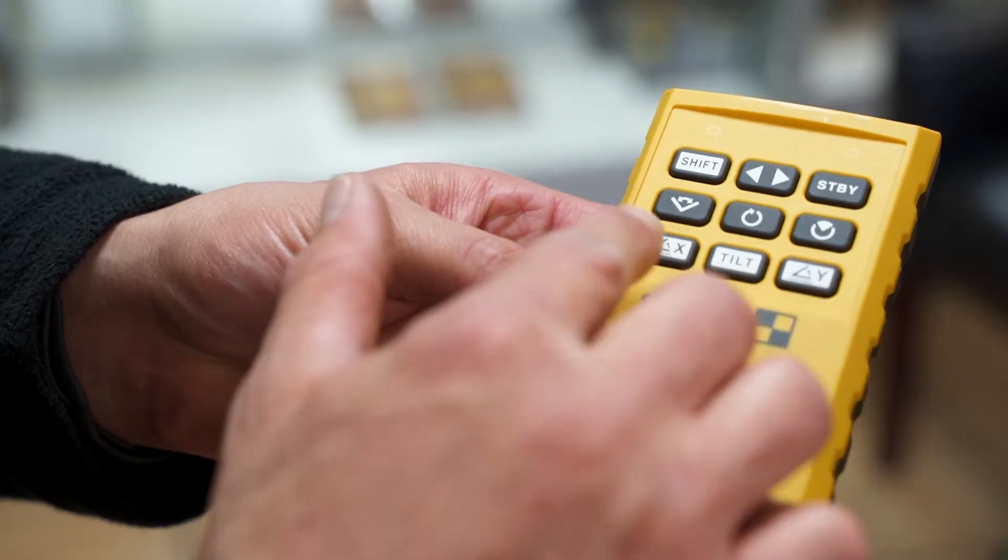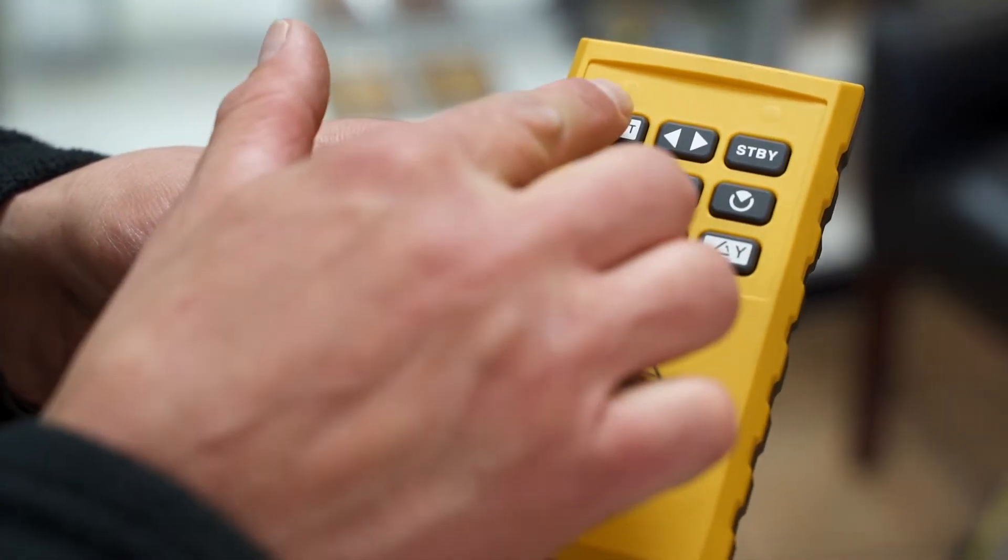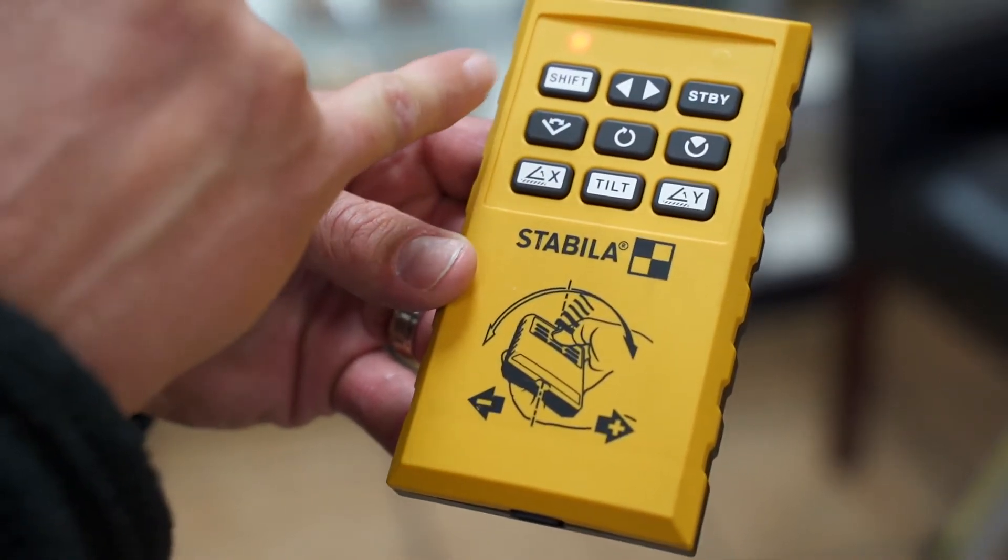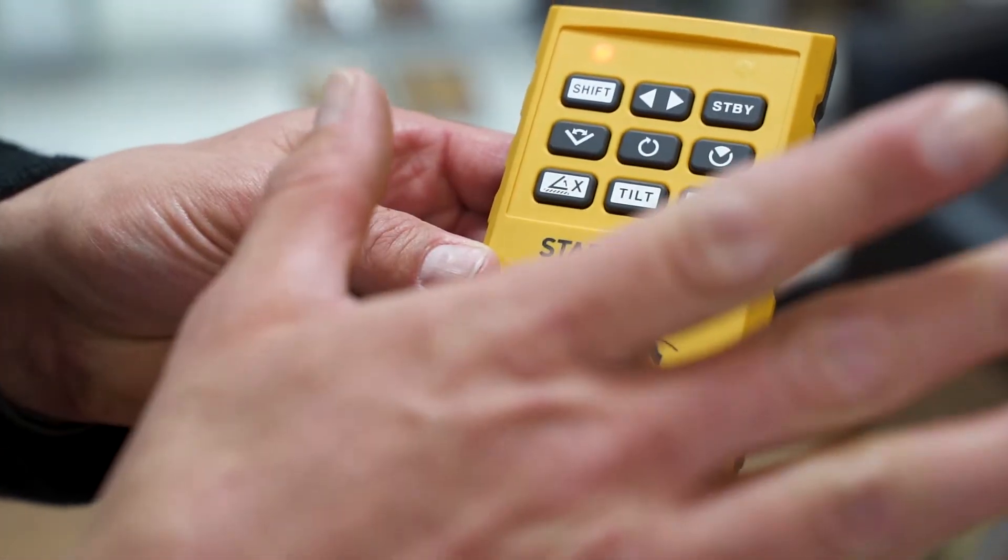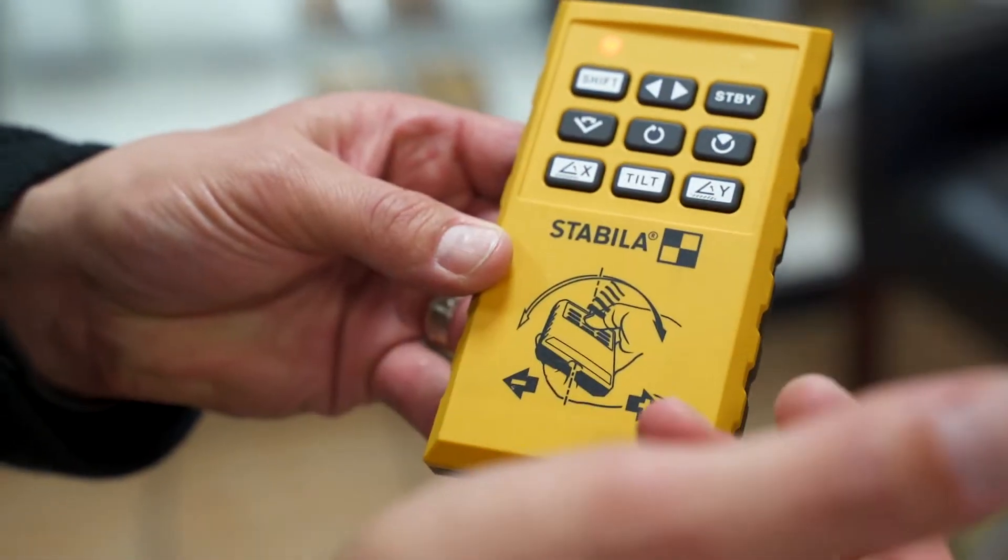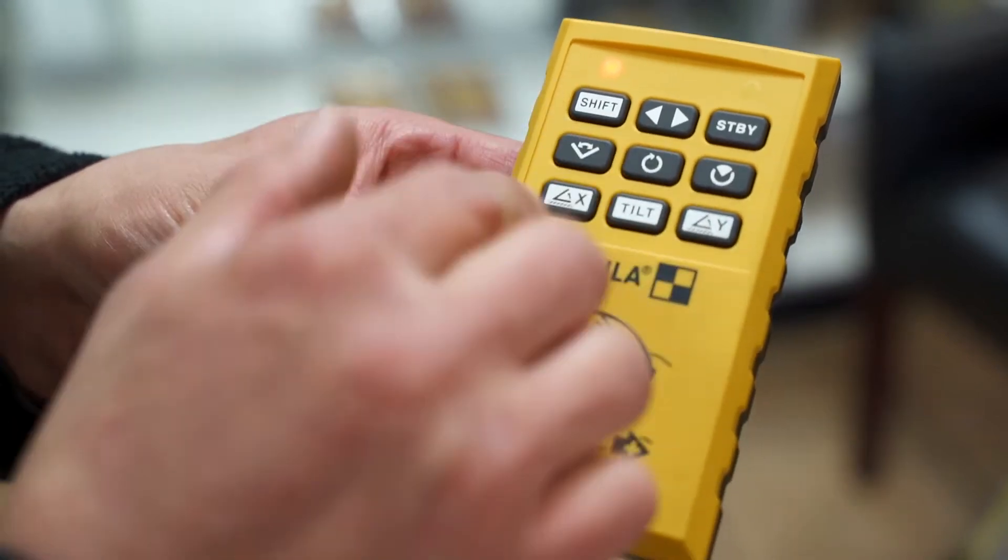So in order to engage either our X or Y axis, what we first need to do is engage it. So we have to hit the shift button. You'll see the light above the shift button illuminated. That lets you know that you are okay and ready to engage in either X or Y axis to achieve your slopes. So if I hit X first while I'm engaged with my shift button.